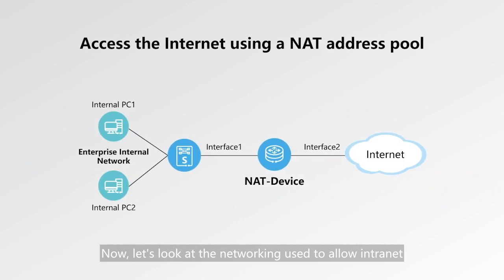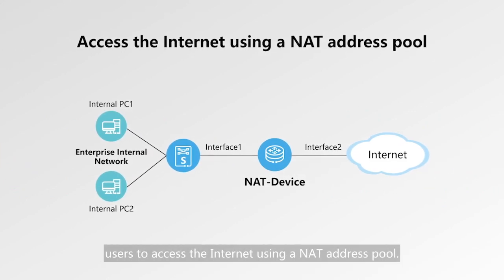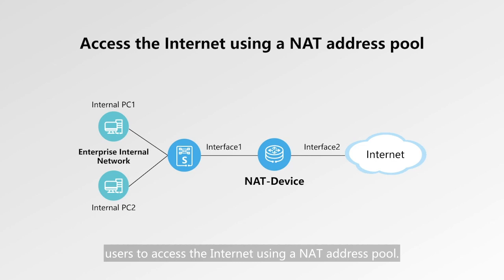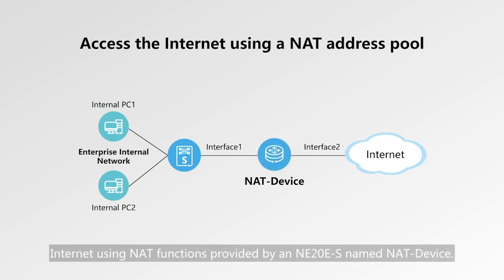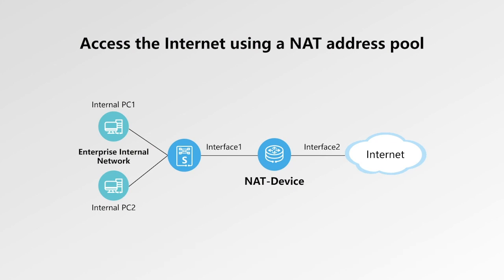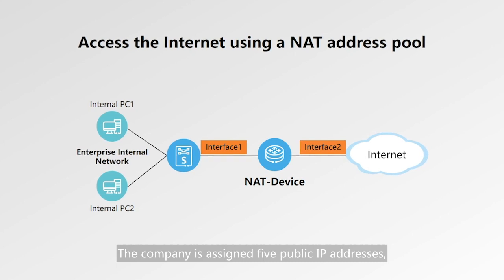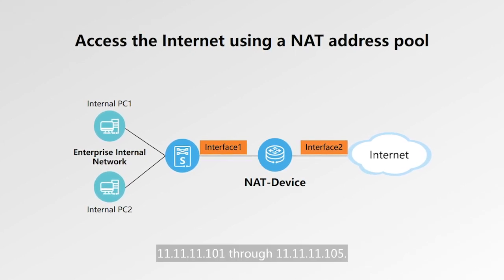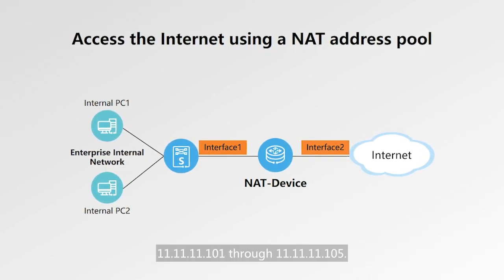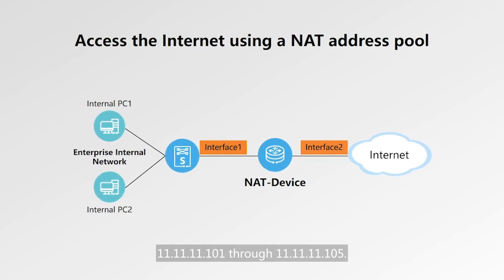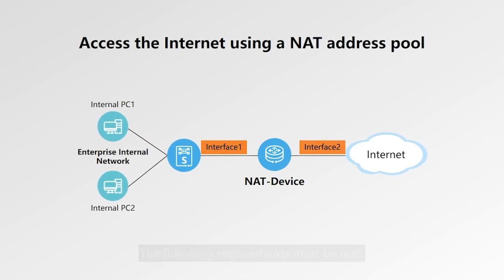Now let's look at the networking used to allow Internet users to access the Internet using a NAT address pool. PCs on a company's internal network need to connect to the Internet using NAT functions provided by an NE20E named NAT device. Interface 1 of the router connects to the Internet and Interface 2 connects to the internal network. The company is assigned five public IP addresses: 11.11.11.101 through 11.11.11.105.